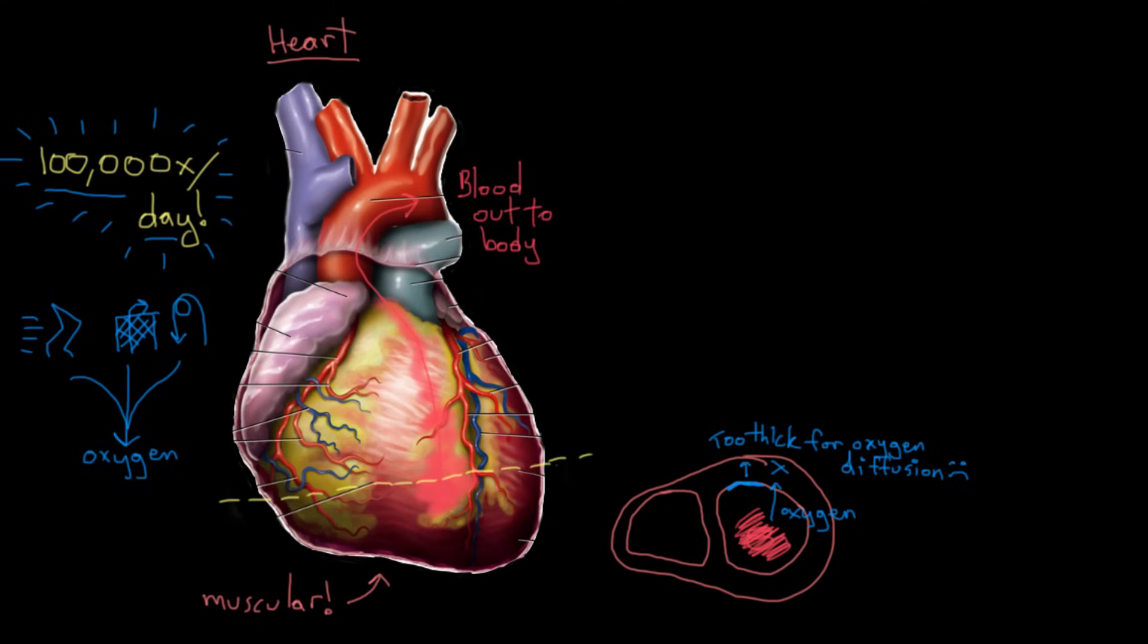So we have a solution for that, and the solution is the coronary arteries. The coronary arteries run on the outside of the heart. You can see this person's right coronary artery, and this person's left coronary artery. Actually, this is the left anterior descending artery, which is a branch of the left coronary artery. These coronary arteries bring copious amounts of blood to the heart muscle and feed it enough blood to do all the work that the heart needs to do.